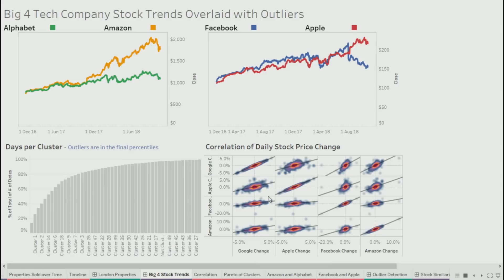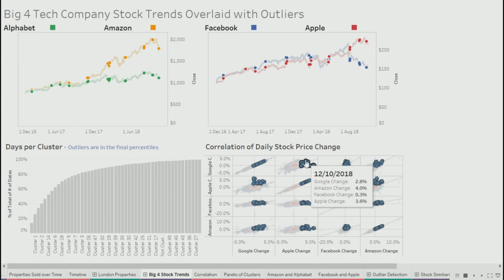What you can do is look at the correlation of all four companies and identify the outliers. The outliers should in principle be the days where something interesting happened to one of the companies. We can perform outlier detection through cluster analysis — Tableau's native built-in cluster analysis. Cluster analysis statistically groups days together. Because we're trying to group them on four axes, you can't necessarily visually perceive that grouping — you need statistics to compute it for you. So we generate 50 clusters and find the clusters that don't have many days in them, because those are the outliers.